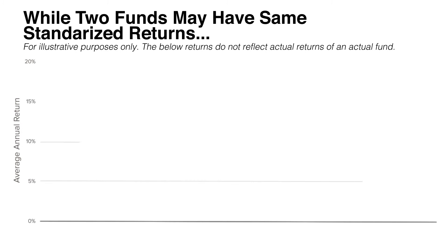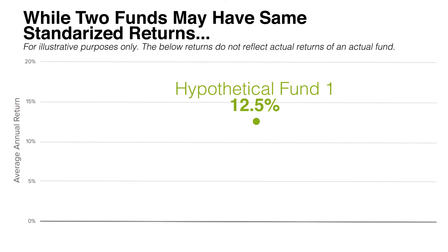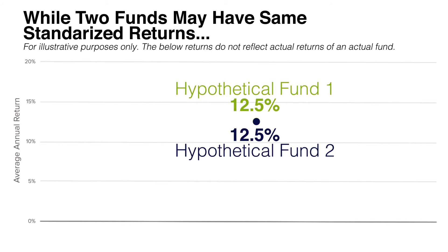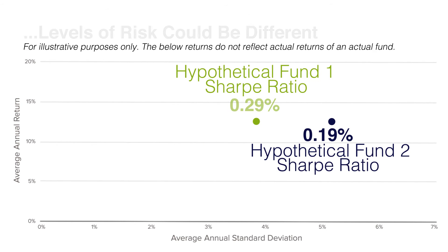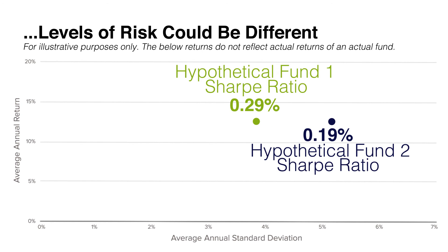For example, if you had two funds that had exactly the same return, you would have no real understanding of how they achieved that return, how they actually got there, and what that experience was like. By looking at the Sharpe Ratio, you can understand what risk was taken to achieve that return. It's important to note that a higher Sharpe Ratio does not necessarily represent lower volatility — what it does represent is better risk-adjusted performance, so you're getting a higher return for the risk that you are taking.